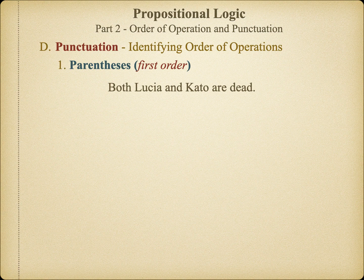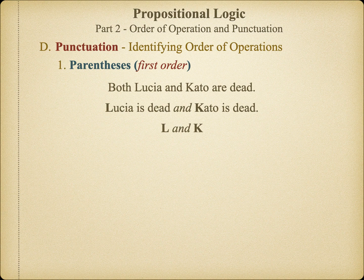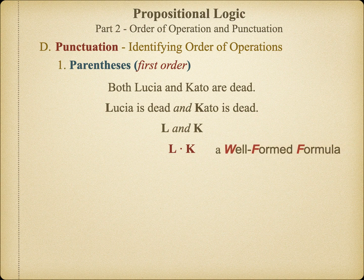Let's start with a simple example. First, we identify the symbols for the two statements: Lucia is dead and Cato is dead — L and K respectively. Next, let's eliminate all the rest of the words from the statement, leaving us simply L and K. Finally, we symbolize the conjunction with the dot, and we have L dot K. This symbolized proposition clearly expresses the conjunction of L and K, so we call this a well-formed formula. We've eliminated all the ambiguity of ordinary language and made the logical implication explicit — we are saying that both L and K are true. Whether or not they really are true is a matter of fact which could impact the soundness of an argument, but it's not relevant to validity, which is what we're most concerned with in deduction.